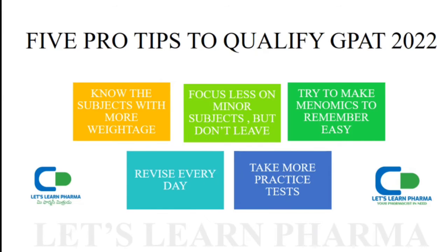The next tip is to try to make mnemonics to remember easily. You can't remember all the drugs of pharmacology or the classifications easily, so if you make mnemonics it will be easy to remember them. You can do the same for pharmacognosy and some other subjects.